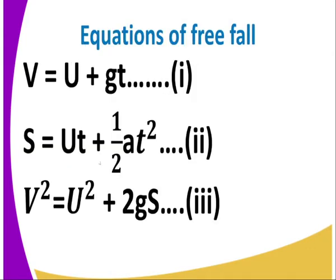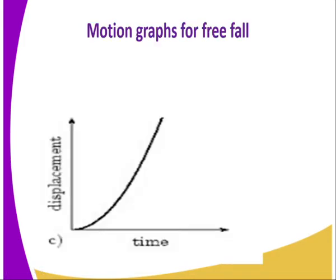In the equations of free fall, since bodies are accelerating towards the earth and the acceleration is due to gravity, we substitute 'a' with 'g'. Our first equation becomes v = u + gt. The second equation becomes s = ut + ½gt². The third equation becomes v² = u² + 2gs.